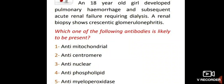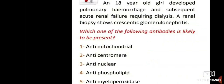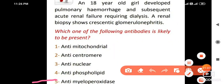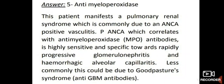An 18-year-old girl developed pulmonary haemorrhage and subsequent acute renal failure requiring dialysis. Renal biopsy shows crescentic glomerulonephritis. The antibody likely to be present is anti-myeloperoxidase antibodies. The patient manifests pulmonary-renal syndrome, commonly due to ANCA-positive vasculitis. P-ANCA, which correlates with anti-myeloperoxidase antibodies, is highly sensitive and specific towards rapidly progressive glomerulonephritis and haemorrhagic alveolar capillaritis. Less commonly this could be due to Goodpasture's syndrome (anti-GBM antibodies).